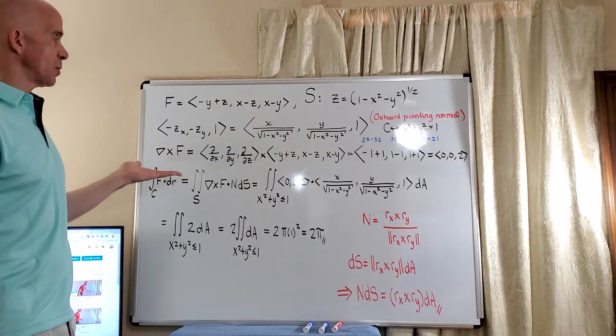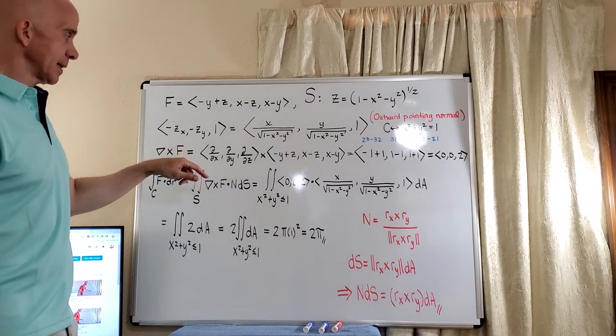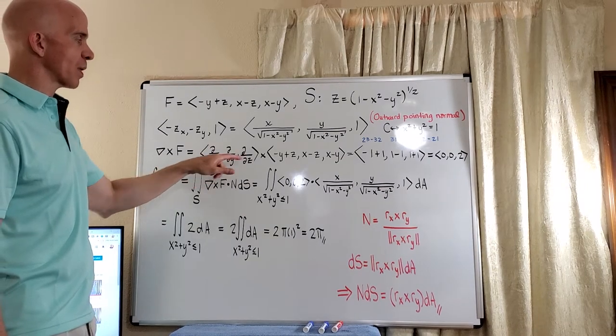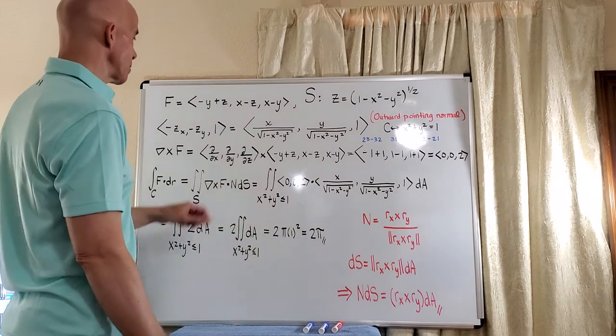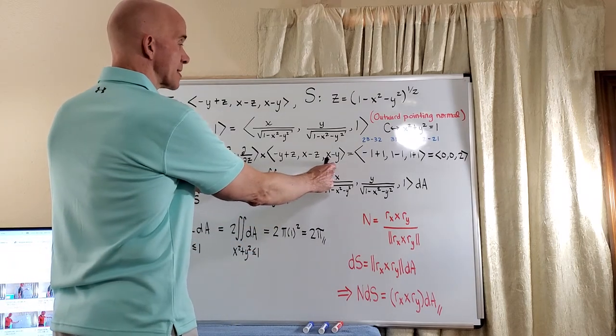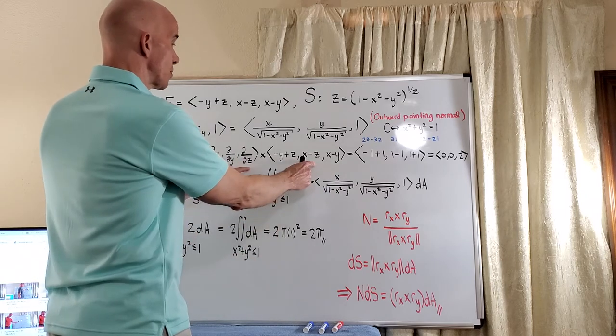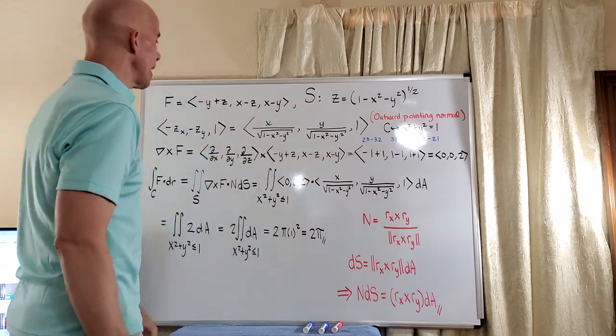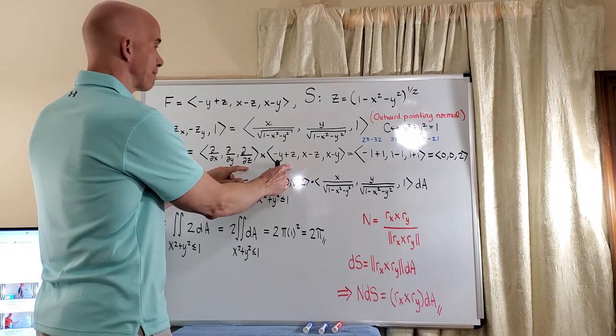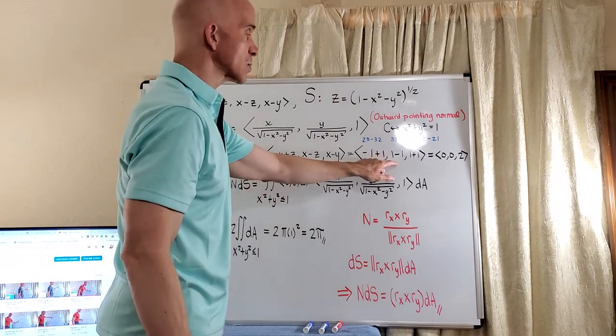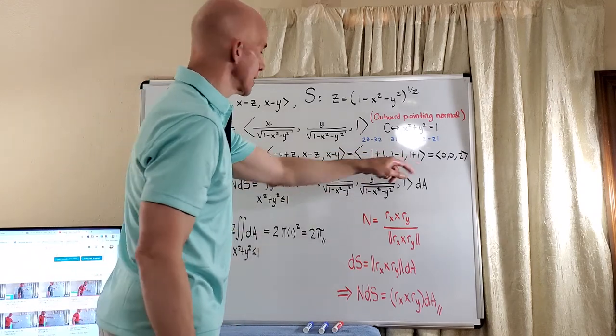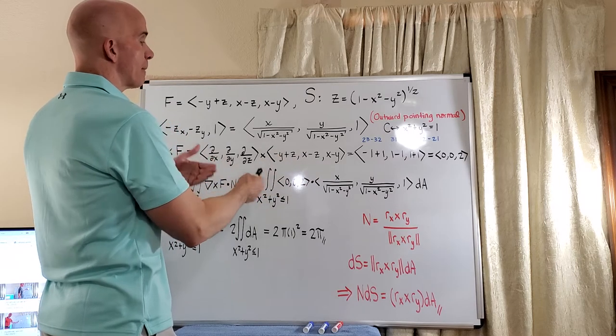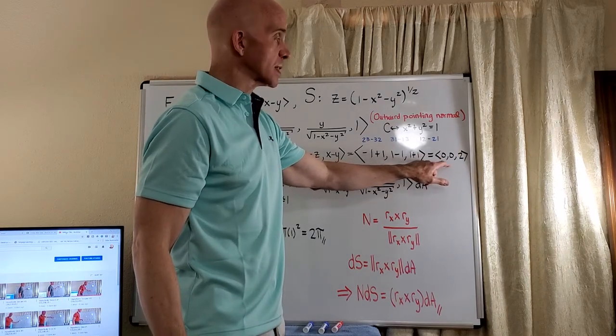So now what we need to do is to compute the curl of the vector field. So basically, you can write it this way, you can write curl if you like, but remember, this is just the Nabla operator crossed with the vector field. And so we do 2, 3, 3, 2. So 2, 3, in this case, will give us a negative 1. And then 3, 2, in this case, will also give us a negative 1, but we subtract, so we have negative 1 plus 1. And then 3, 1 will give us a 1. And then 1, 3 will also give us a 1. 1 minus 1, that'll give us a 0. And then lastly, 1, 2 will give us a 1. And 2, 1 will give us a negative 1. 1 minus the negative 1 gives us 1 plus 1. So we get a curl of 0, 0, 2.